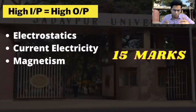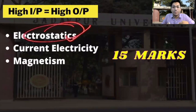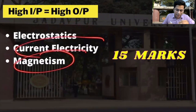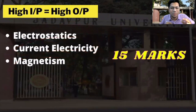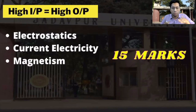Next is the high input, high output category, where you have to put in a lot of effort but you get a lot of output. This includes the whole of electrostatics, magnetism, and current electricity, which are the initial topics of 12th and are very big. In these chapters you will be able to get a lot of output. If you have studied this data, you will have a very good outcome.